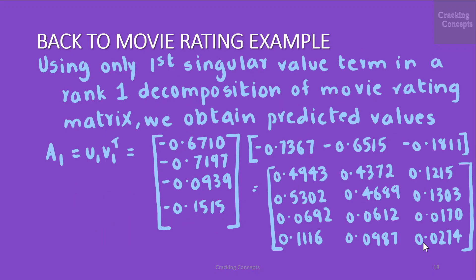Now going back to our movie rating example, we can now apply the concept of low rank approximation to approximate the original data matrix. Recall that our first singular value captures the notion of science fiction theme in movies and science fiction lovers. Thus by using only the first singular value term in a rank 1 decomposition of the movie rating matrix we obtain the predicted ratings.